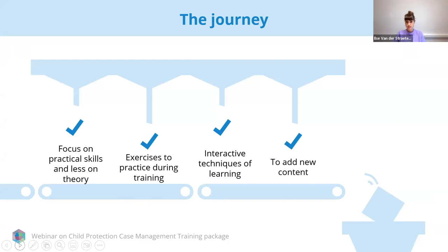We also got a lot of suggestions on content to add. It was really hard to cut it down because there were so many ideas. The main things that returned were: how to communicate with kids of different ages, with different abilities and in different developmental stages. MHPSS was suggested many times, so we included this — it's one of the newest add-ons. We also added how to use tools like safety planning and how to work on family tracing and reunification.